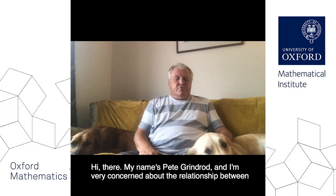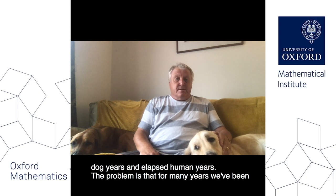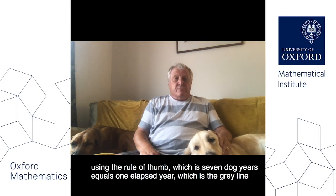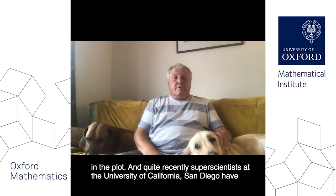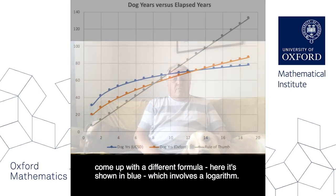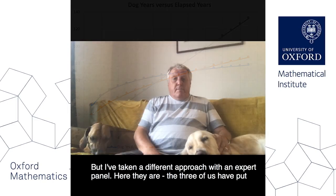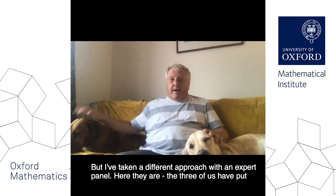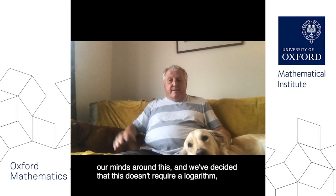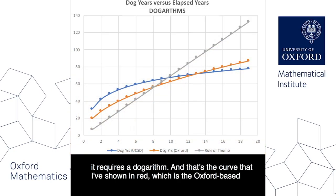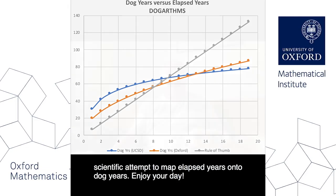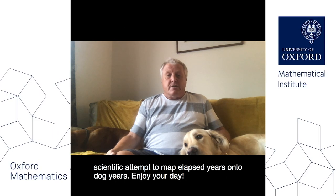Hi there, my name's Pete Grindrod, and I'm very concerned about the relationship between dog years and elapsed human years. For many years we've been using the rule of thumb that seven dog years equals one elapsed year — the grey line in the plot. Scientists at the University of California, San Diego have come up with a different formula, shown in blue, which involves a logarithm. But I've taken a different approach with an expert panel — the three of us have decided this doesn't require a logarithm. It requires a dog-a-rhythm, the curve shown in red — the Oxford-based scientific attempt to map elapsed years onto dog years.